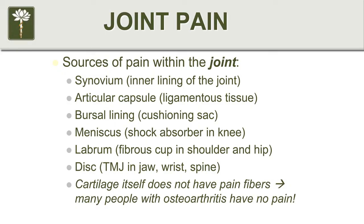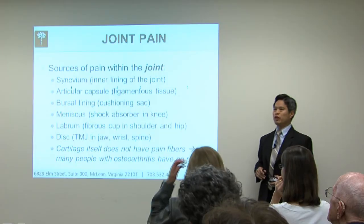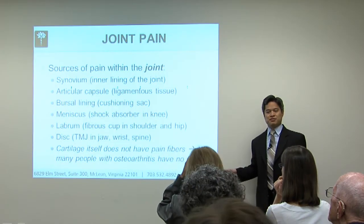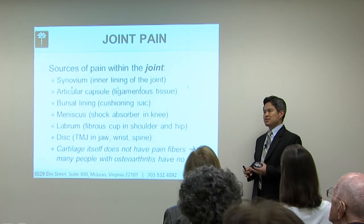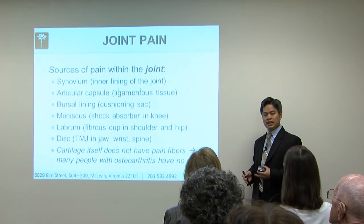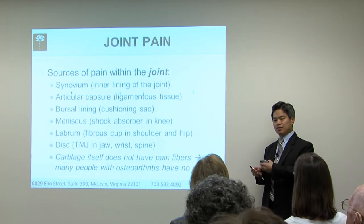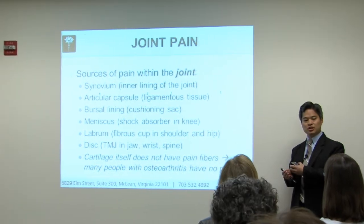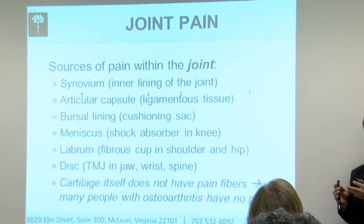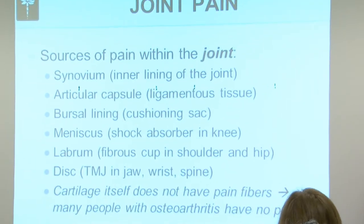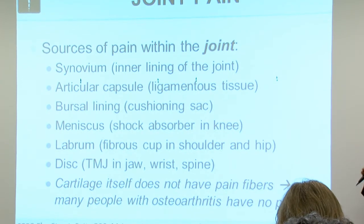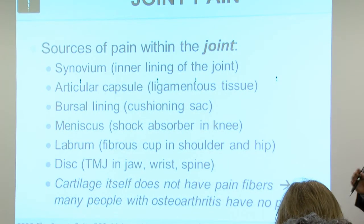You've got the synovial lining, the articular capsule, the bursa lining. A bursa is kind of like a water balloon — it's a fluid-filled sac that acts as a cushioning between mostly tendons and their attachment on the bone. It works to reduce the friction of movement as those tendons and muscles are moving around.